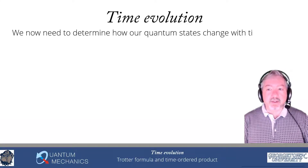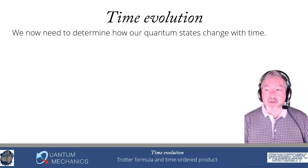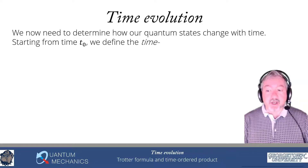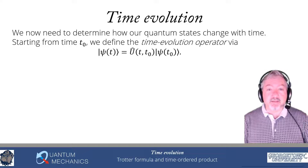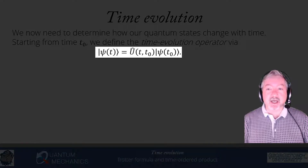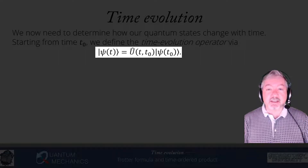We've been focusing primarily on eigenstates so far in this class, and now we want to talk about how those quantum states change with time. So we just define an operator that does that. We start at some time t0 and define what we call the time evolution operator, which is û(t, t0), to be the operator that takes a wave function ψ at t0 to the wave function ψ at time t. That's expressed in the equation below.